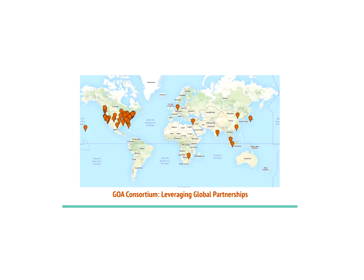A little bit about Global Online Academy: GOA is a consortium of 65 independent schools from around the world, founded in 2011 with the mission to take what makes independent school education great and transfer that to the online learning environment in a way that leverages global and online learning skills. All of our courses are offered as a supplement to member schools' core academic programs, taught by teachers from our member schools, with class rosters that are mixtures of students from a variety of different schools. We cap our sections at 18 students, so the learning is very much meant to be relationships-based, collaborative, and hands-on.